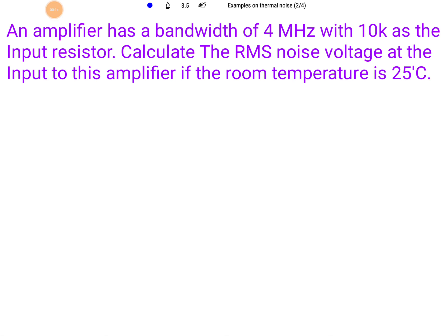In this question, an amplifier has a bandwidth of 4 MHz with an input resistor of 10 Kiloohm. Calculate the RMS noise voltage at the input to this amplifier if room temperature is 25 degrees Celsius.